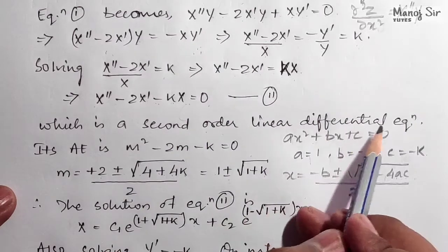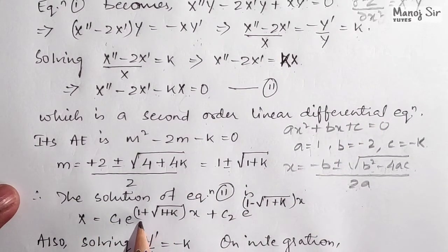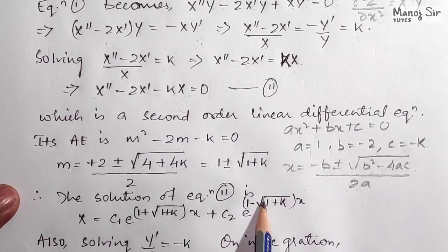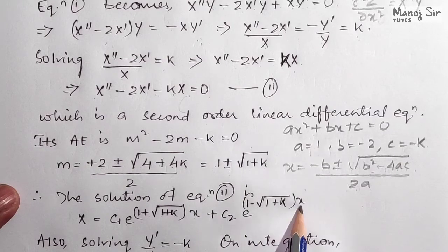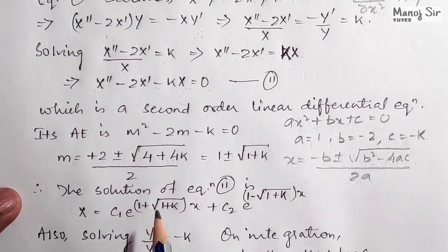So the two roots of m are: m1 equals 1 plus root of (1 plus k) and m2 equals 1 minus root of (1 plus k). The solution for X is therefore X equals c1 times e to the power (1 plus root of 1 plus k) times x, plus c2 times e to the power (1 minus root of 1 plus k) times x.